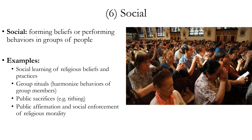A sixth salient property is that religion is generally social — forming beliefs or performing behaviors in groups. Religious beliefs and practices are generally learned socially from other people rather than developed entirely individually. A lot of religious rituals are performed by groups, with harmonized behaviors like chanting, kneeling, and praying together. Religious sacrifice is often done in public where others can observe, and there is public affirmation and social enforcement of religious morality — following moral rules is often encouraged or enforced strictly by other members of the religious community.